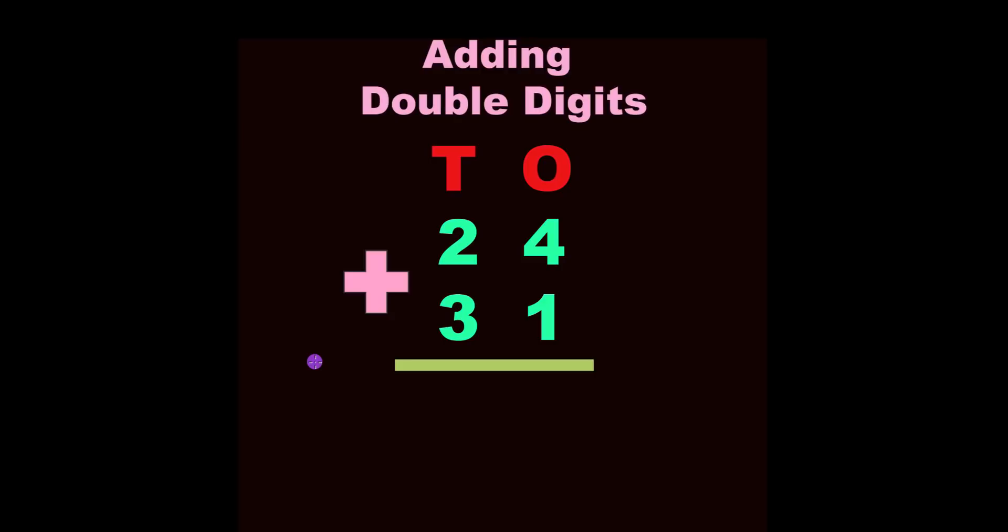Just remember, the first thing you need to know when adding double digits: this side is the tens, this side is the ones. Tens and ones. That's the first thing you need to make sure that you understand when we are learning how to add double digits.